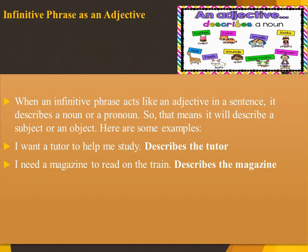Infinitive phrases as adjective — when an infinitive phrase acts like an adjective, it describes a noun or the subject or object. Example: 'I want a tutor to help me study.' What kind of tutor? One who helps me study — so 'to help me study' is an infinitive phrase. 'I need a magazine to read on the train.' Since it is describing the noun 'magazine,' 'to read on the train' is an infinitive phrase acting as an adjective.